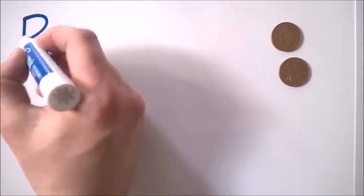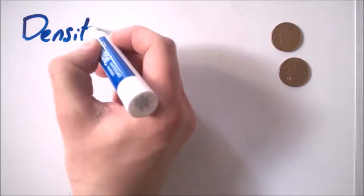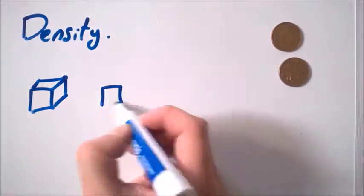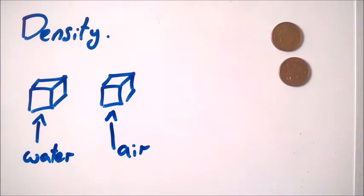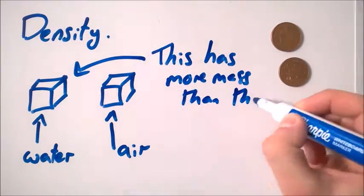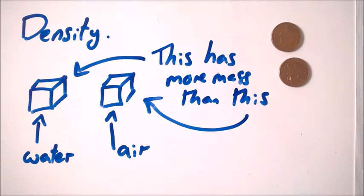How it works. Let's recap some stuff about density. Imagine we have two identically sized blocks of water and air. At normal atmospheric pressure the block of water will have more mass than the block of air. It weighs more.